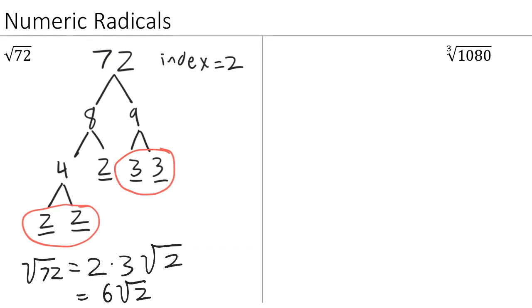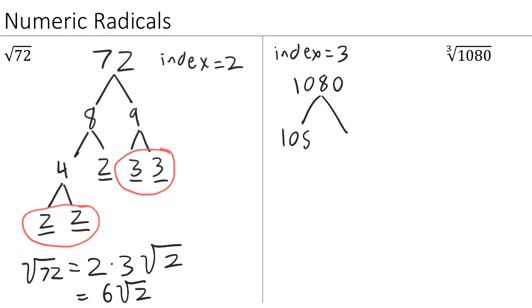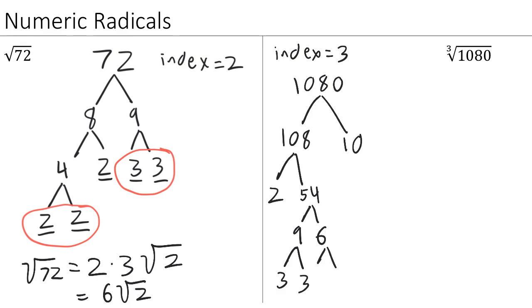Now let's move on to the third root of 1,080. The first thing to notice is that our index is 3, and now we need to make our factor tree. To factor 1,080, I would notice that it must be divisible by 10 because it has a 0 on the end — it's 108 times 10. Then 108 is 2 times 54, 54 is 9 times 6, 9 is 3 times 3, 6 is 3 times 2, and 10 is 5 times 2.